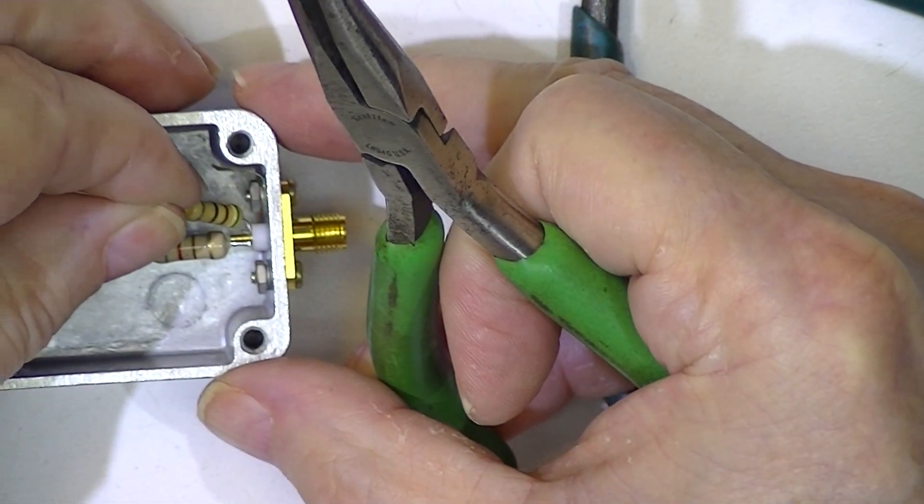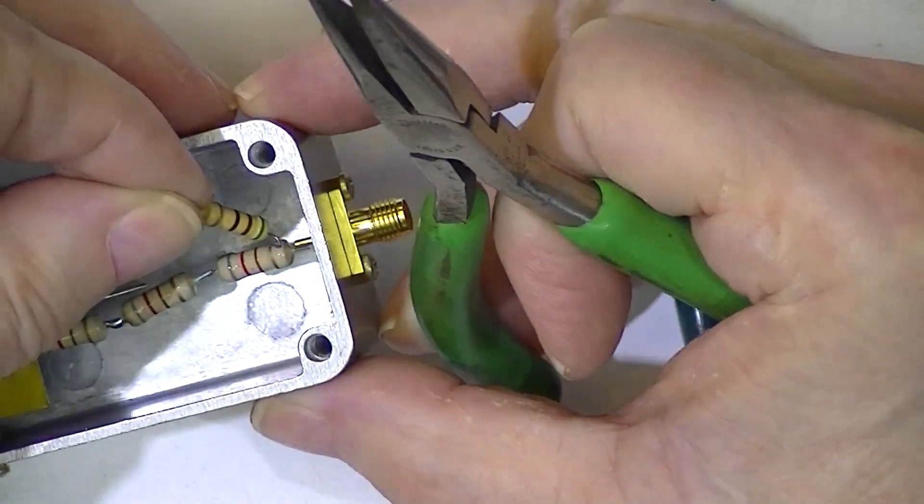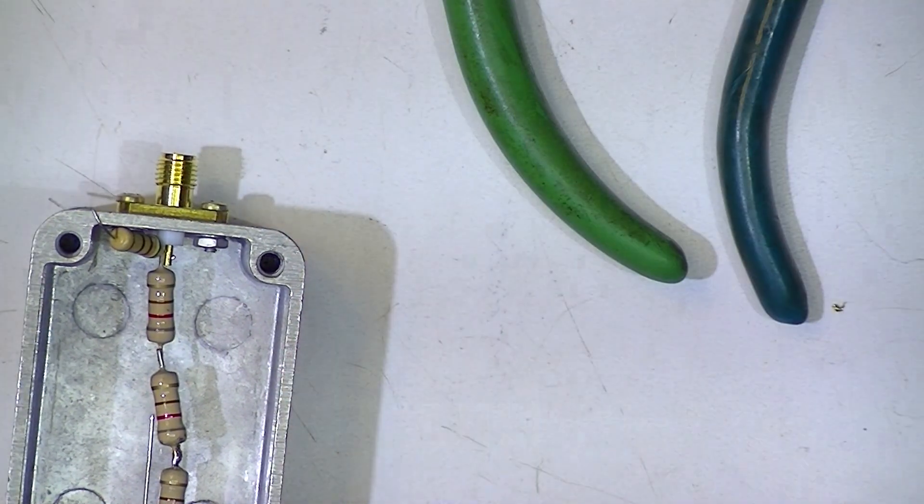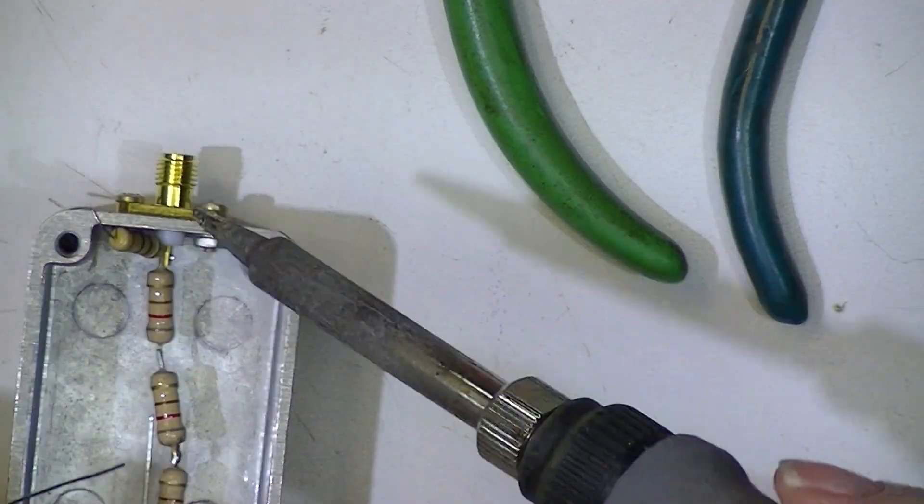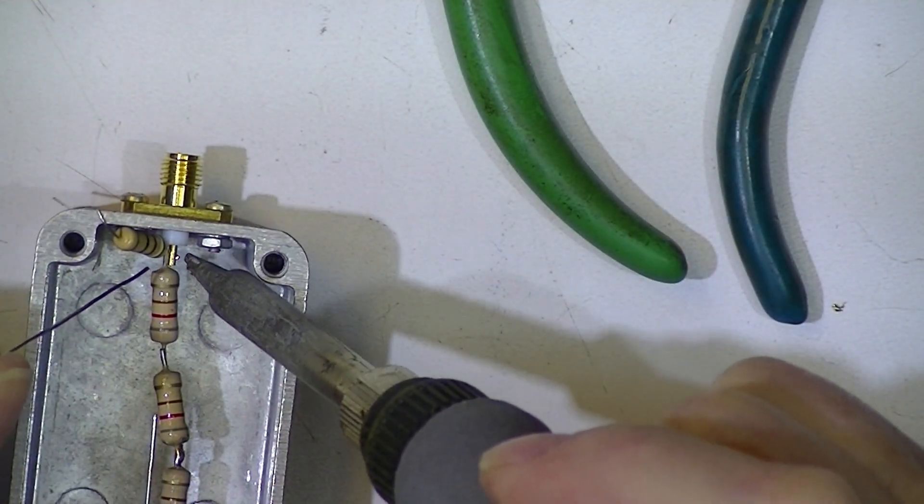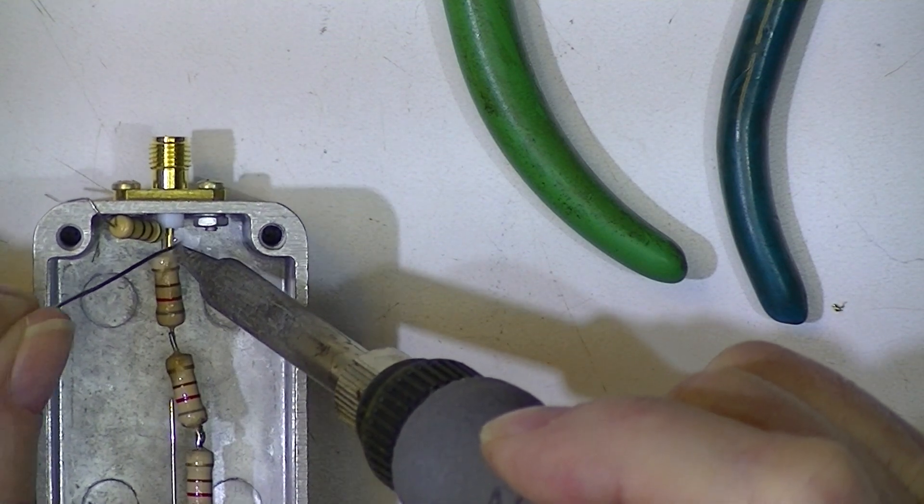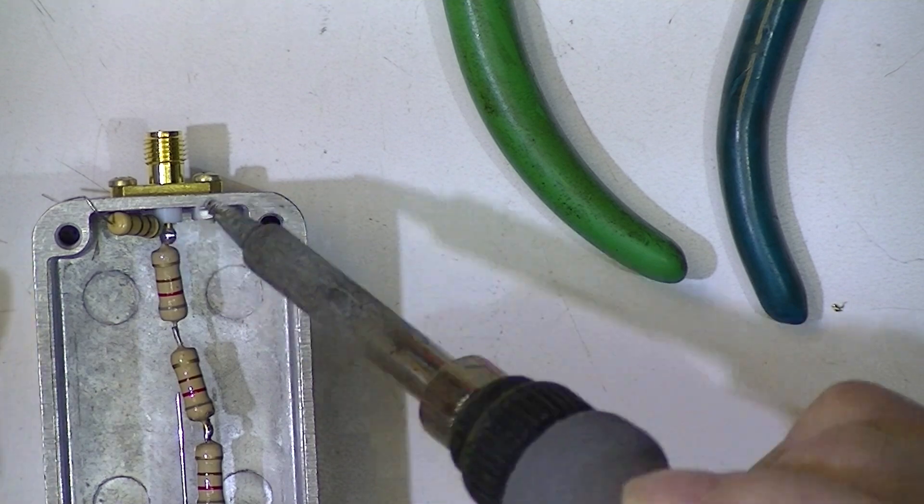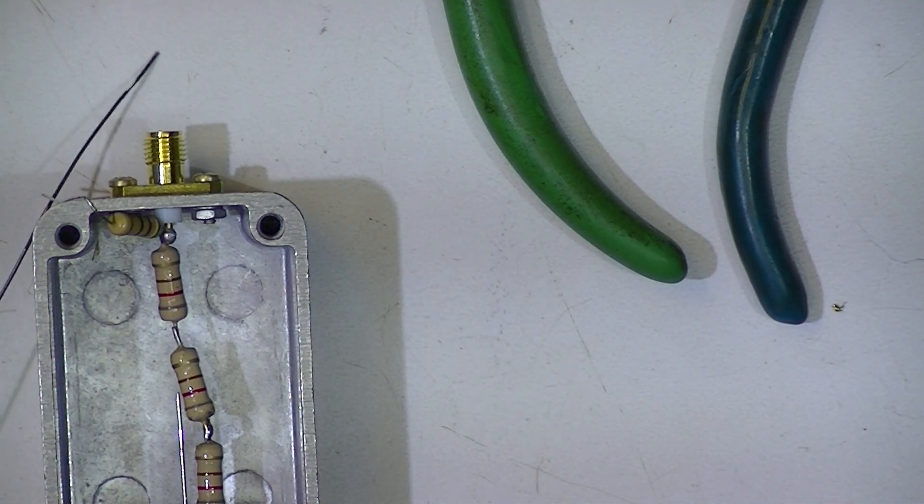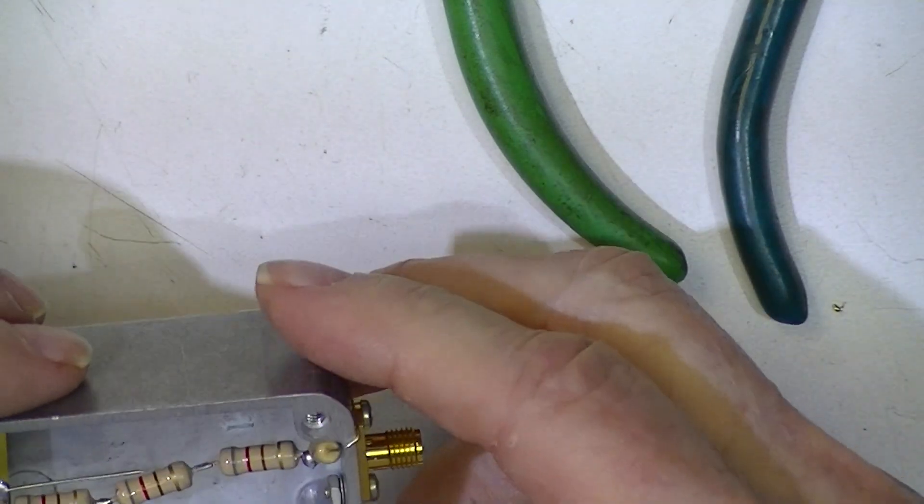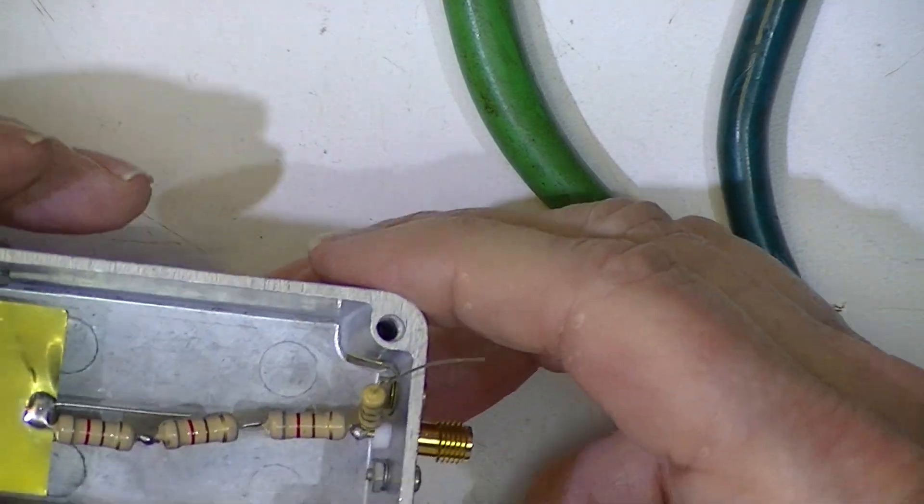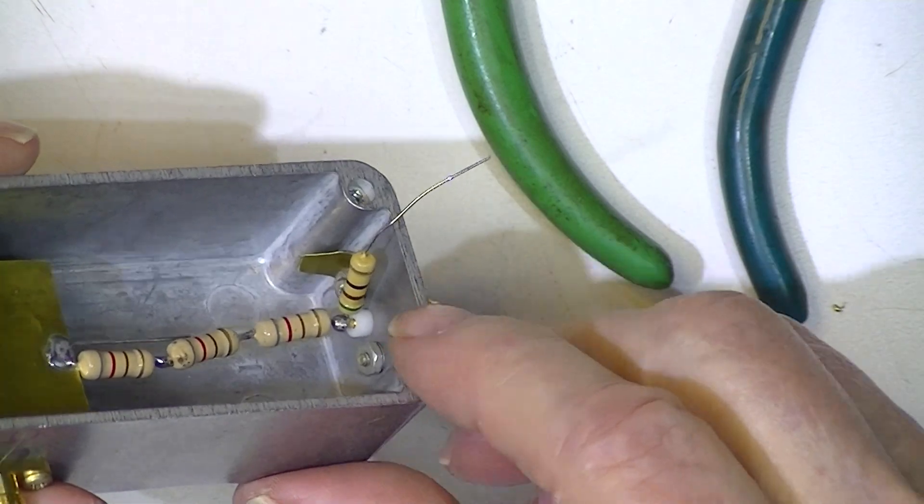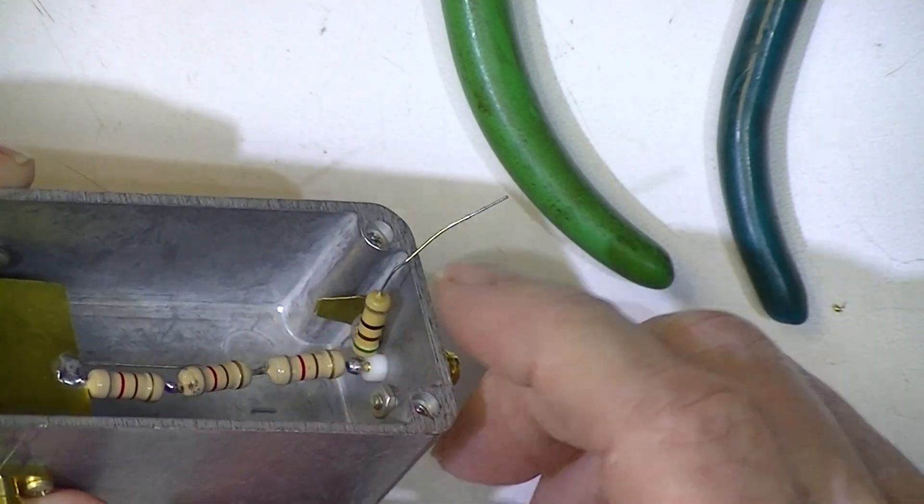I'm going to try to solder it. I think I've soldered all three together: that is the SMA center pin, this resistor, and this resistor.